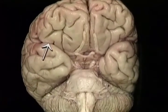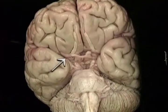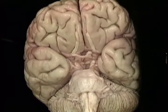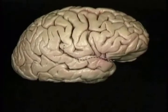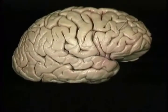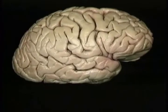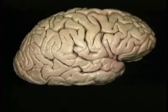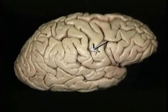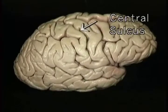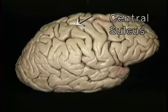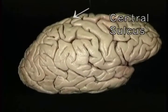Here's the medial end of the lateral sulcus in the intact brain. The lateral sulcus separates the frontal lobe above from the temporal lobe below. This long sulcus running upwards and backwards is the central sulcus — it's the only one that runs all the way to the medial surface of the hemisphere.